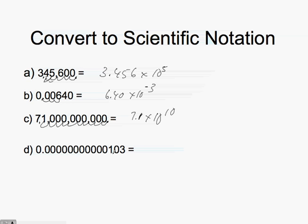And here's another example. We want the decimal place to be to the right of the first non-zero number. Locate our decimal point. This is 1, 2, 3, 4, 5, 6, 7, 8, 9, 10, 11, 12. So, it's 1.03 times 10 to the negative 12th.